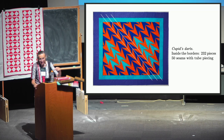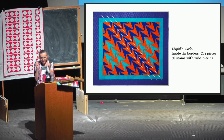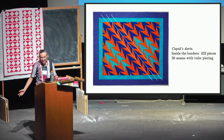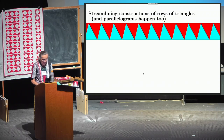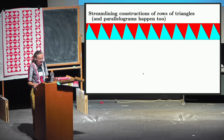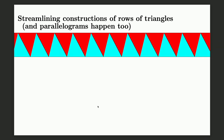The tip angles are arctangent of one-third, which is about 18.5 degrees. If I wanted to work with 18.5 degrees directly, that's hard — but arctangent of one-third is easy for mathematicians. We want to make rows of triangles and parallelograms; they go hand in hand.